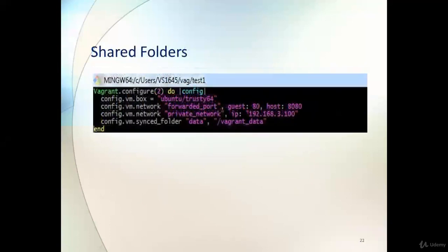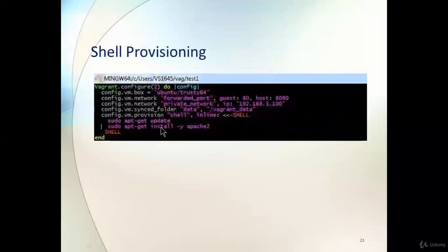To share data between Windows and the guest machine, use `vm.synced_folder`. The current folder on the host machine is mapped to a path on the Linux guest — for example, a `data` folder on the host will be accessible at `/vagrant_data` on the Ubuntu machine. Source and destination are easily synced with the `vm.synced_folder` command.